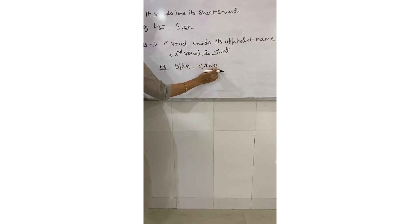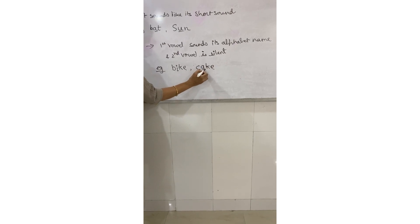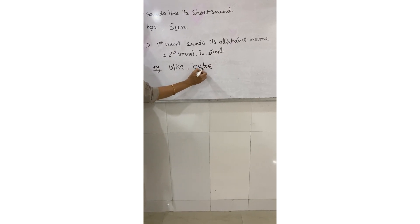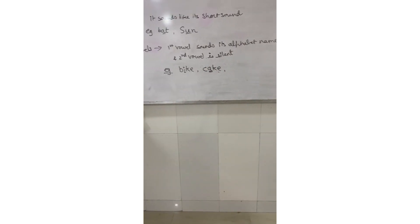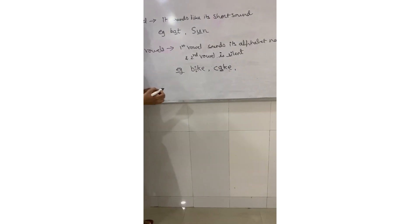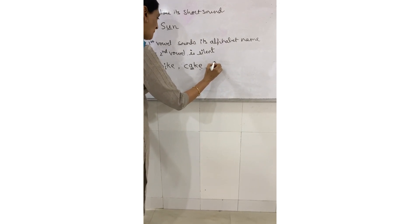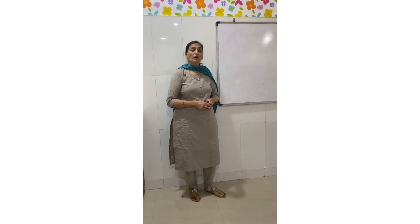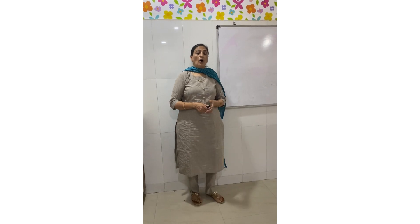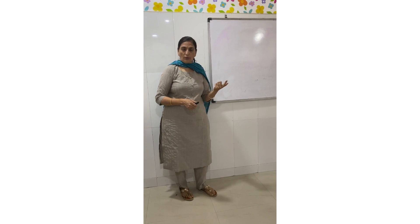Similarly, 'cake': C-A-K-E. The vowel A says its alphabet name 'A', and E is silent. Likewise, 'hate': H-A-T-E. Now, all five vowels have two sounds — a long sound and a short sound. Let us see all of these sounds.